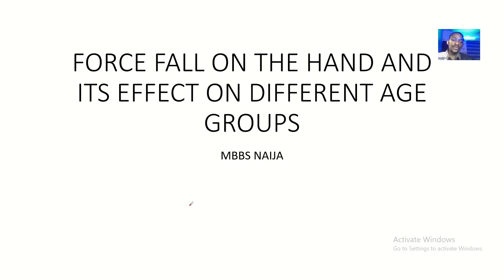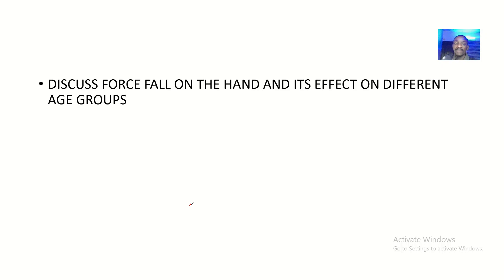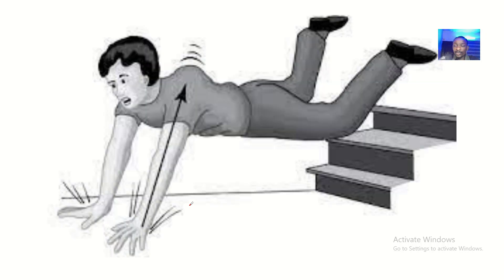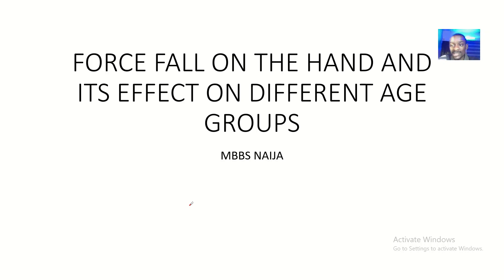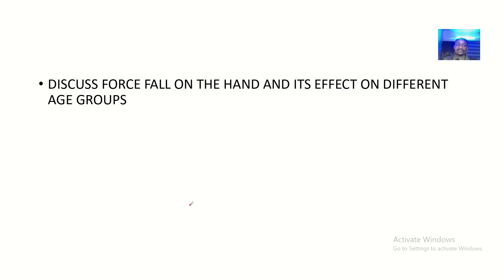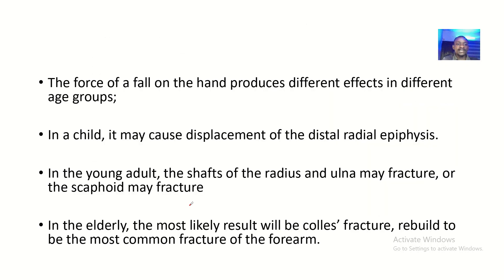Today we'll be talking about fall on the outstretched hand and its effects on different age groups. When you are trying to fall down, you are supporting the weight of your body with your hand. The force of a fall on the outstretched hand produces different effects in different age groups — in a child, in an adult, and in an elderly person.